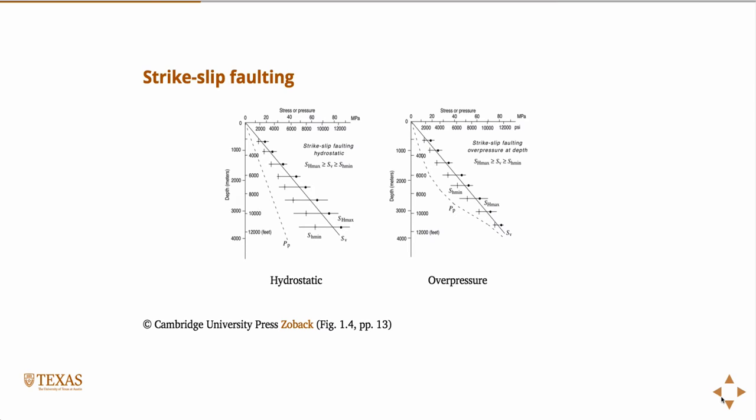Same thing in the strike-slip regime. Essentially what we're doing is we're drawing the same two lines - the pore pressure at hydrostatic and the vertical stress, because those are the two we can estimate relatively well without any other knowledge. And then in the strike-slip regime, we know that the vertical stress is the middle. It's between the other two. And so then SH max would be on the outside there. SH min would be in the middle, and the distance between them is still governed by the strength of the rock. And the same thing, when you go to an overpressure scenario, it just squeezes those bounds down.